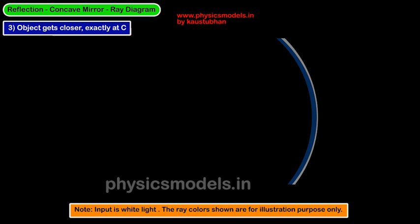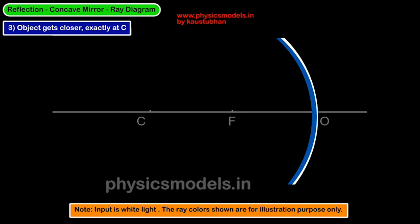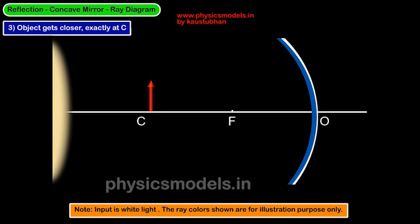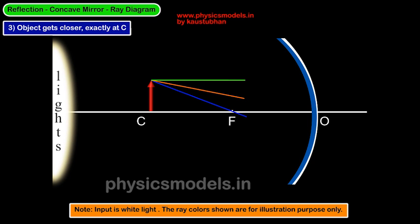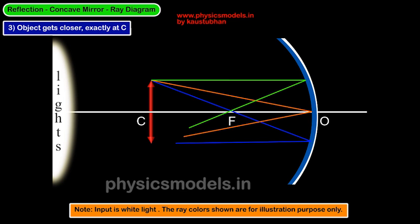Let's take another position of the object as it gets closer — put the object exactly at C. Lay out CFO and draw the object at C. We take a ray which is parallel to the principle axis, a ray that strikes the mirror at point O, and a ray which passes through the point F. The green ray hits the mirror and passes through F. The orange ray hits point O and reflects back with angle of incidence equal to angle of reflection. The blue ray which passed through F goes parallel to the principle axis. You get an image which is also at C — it's inverted, real, and the same size as the object. Always you talk about three things for an image.